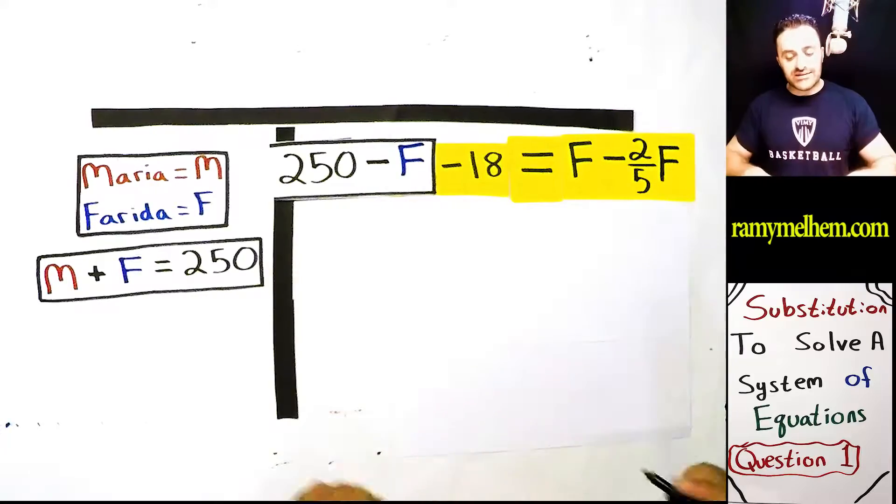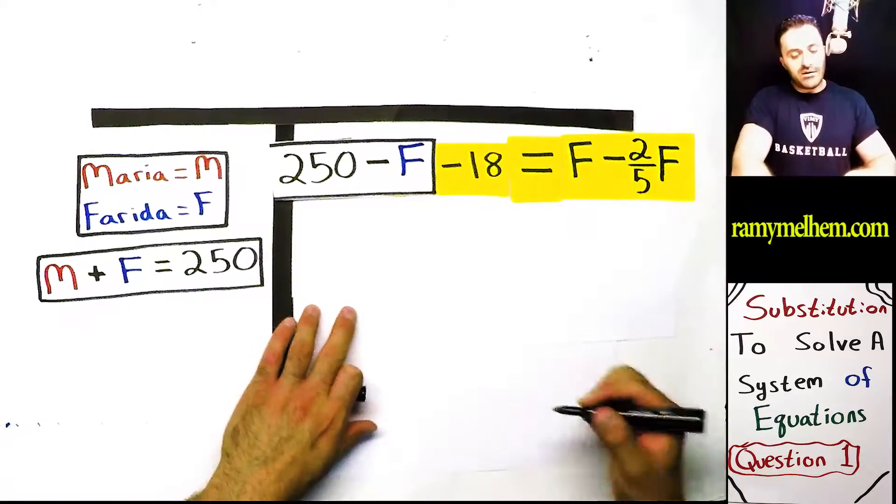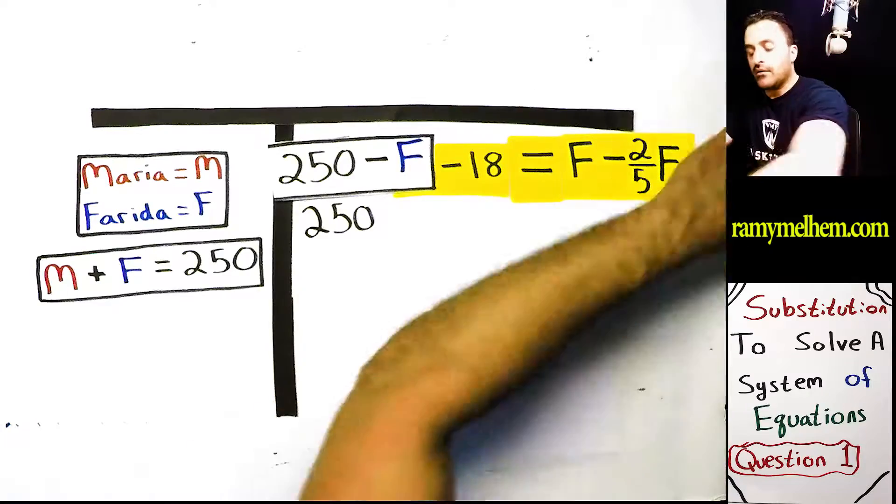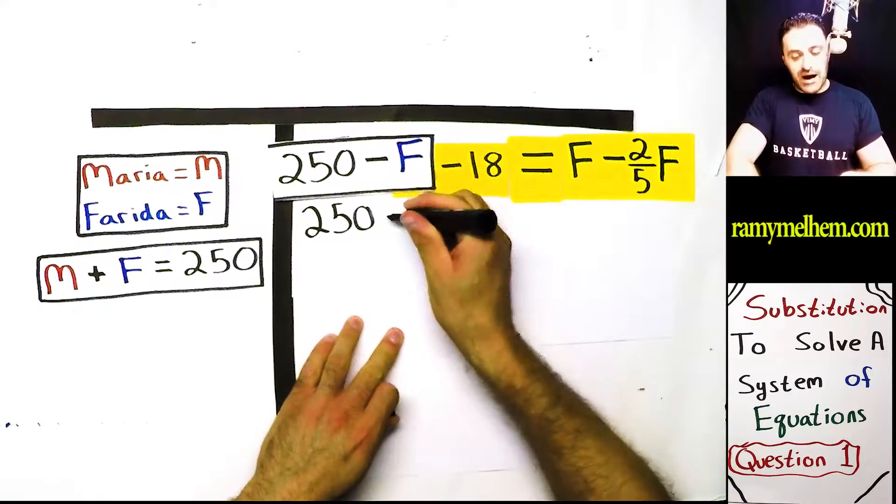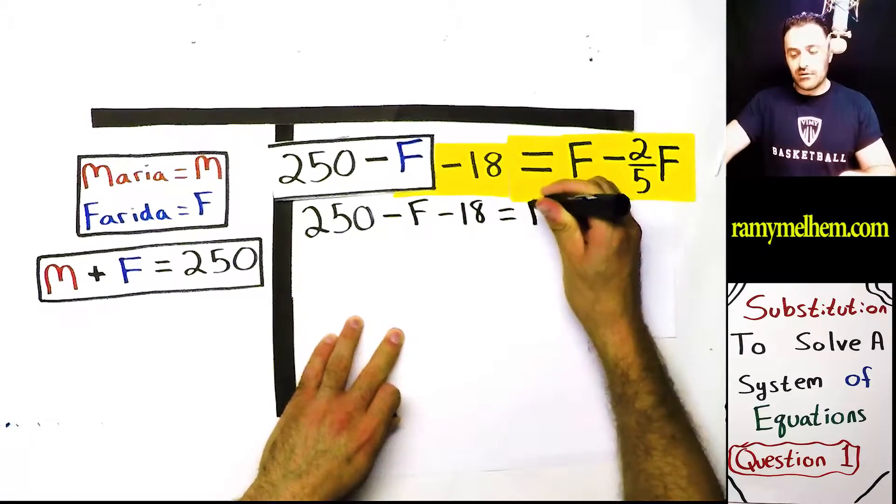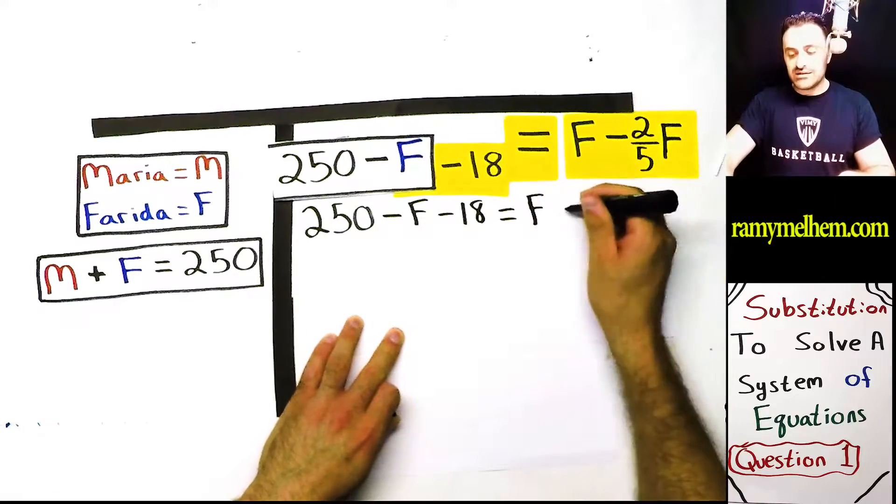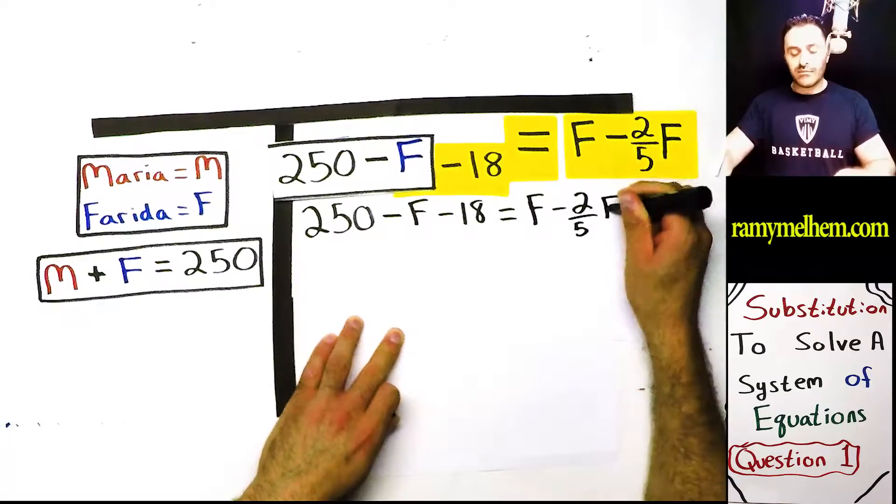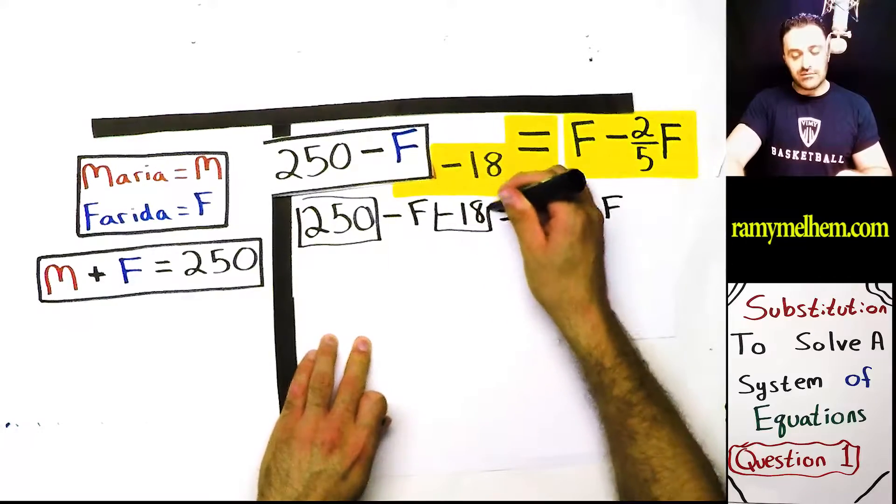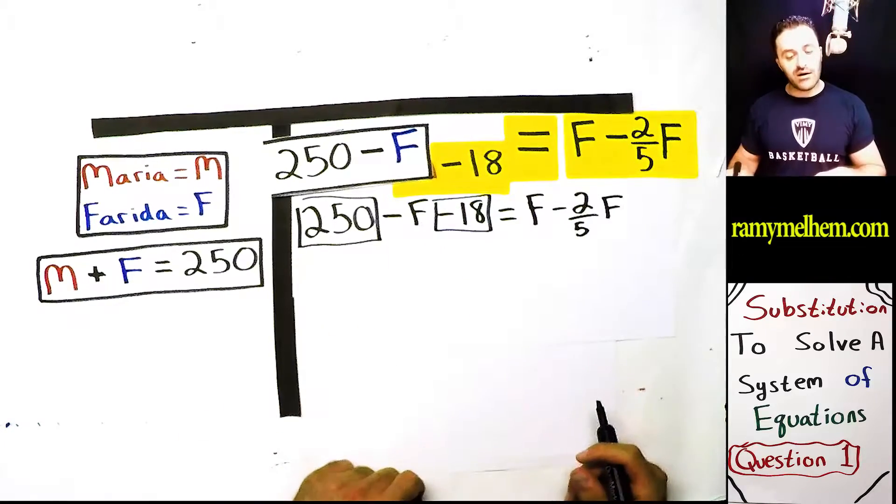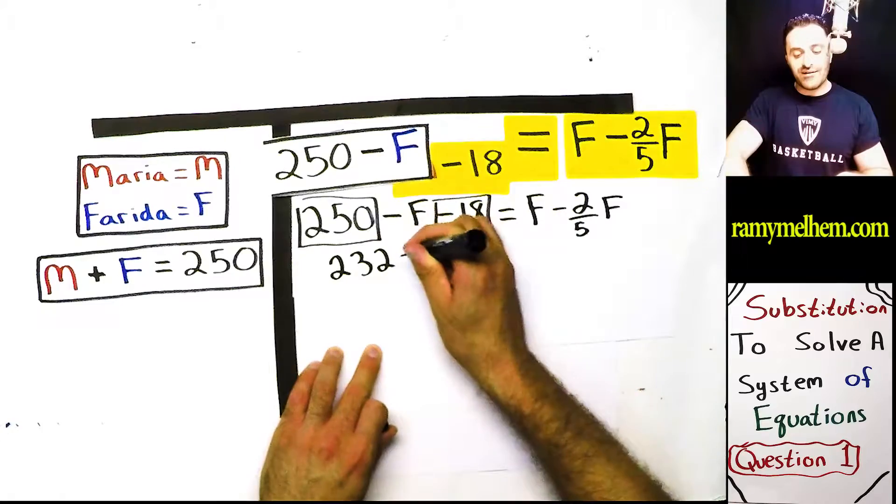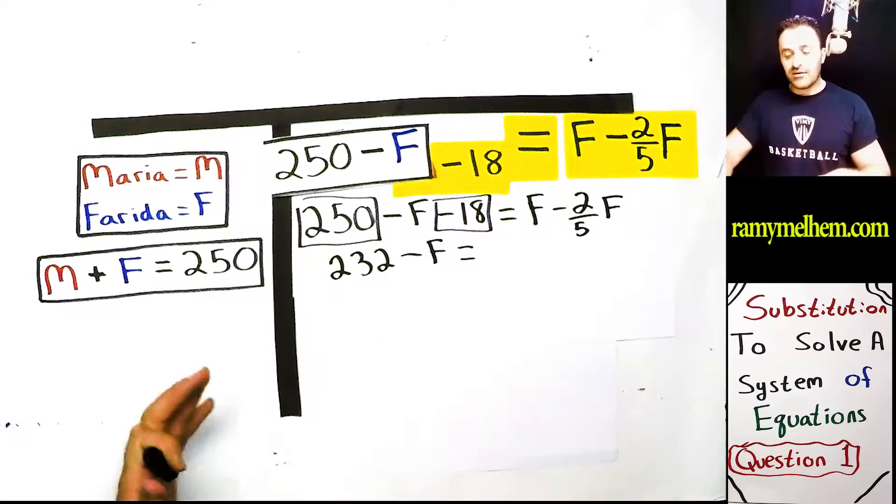So you know what I want to do? I want to rewrite this equation out. Just so it's a little bit more complete. So we'll go 250 minus F minus 18 equals F minus two-fifths F. Let's combine like terms. I have 250 here and I have minus 18. I can combine those. What's 250 minus 18? 250, 240, 230, 232.